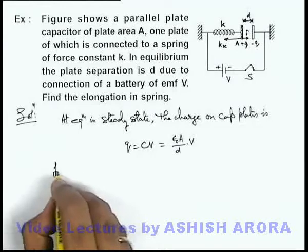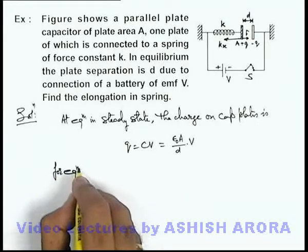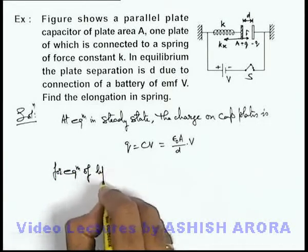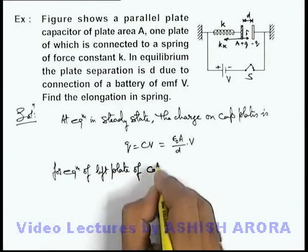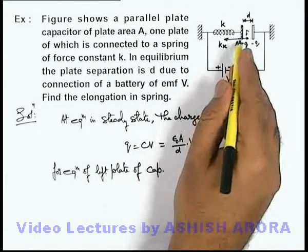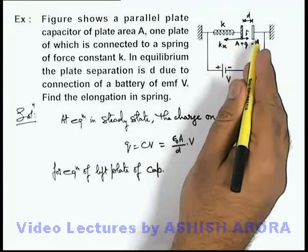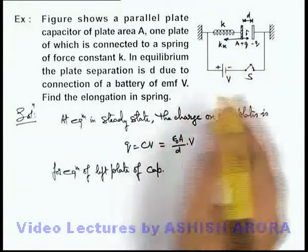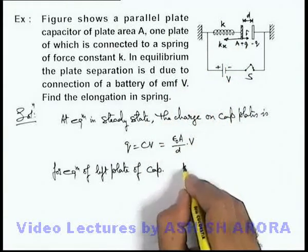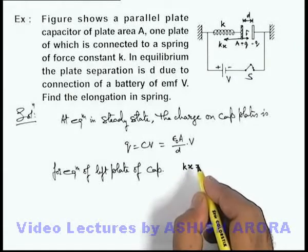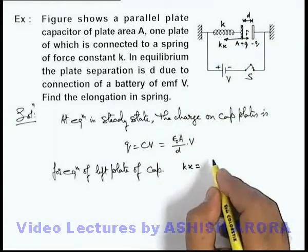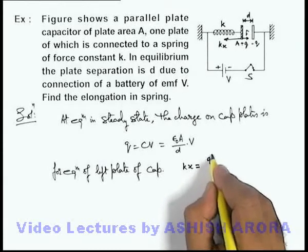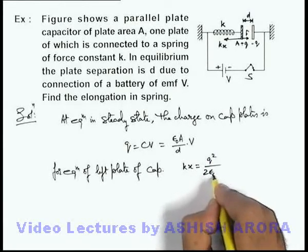And here we can say for equilibrium of left plate of capacitor, we must use the force applied by the spring and the force applied by the other plate have to balance each other. So in this situation, kx must be equal to the force applied by the other plate of capacitor, which we already discussed in previous section, which is q squared by 2 epsilon not A.